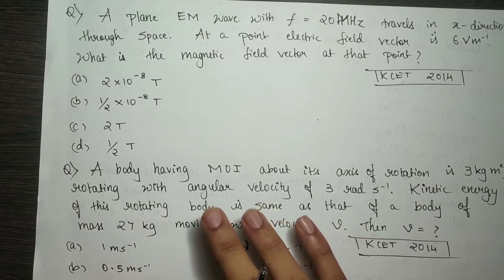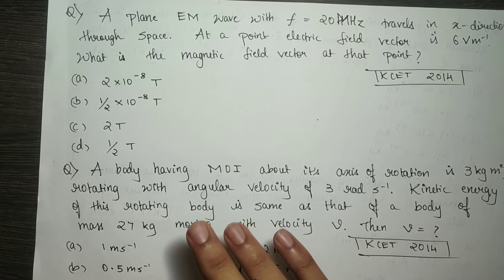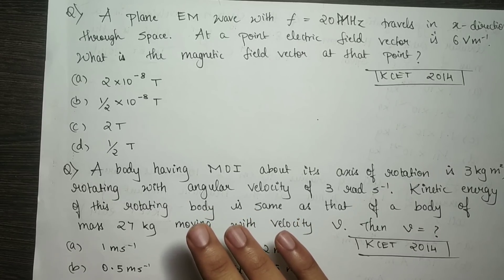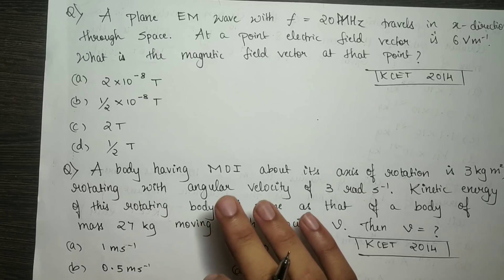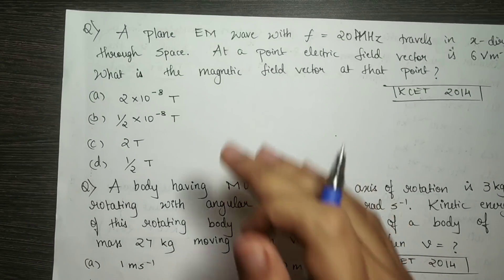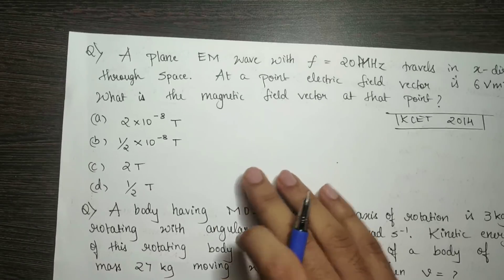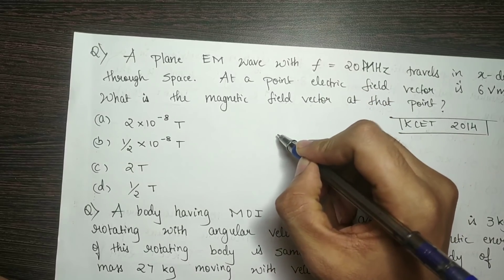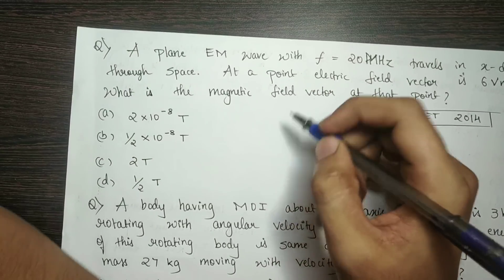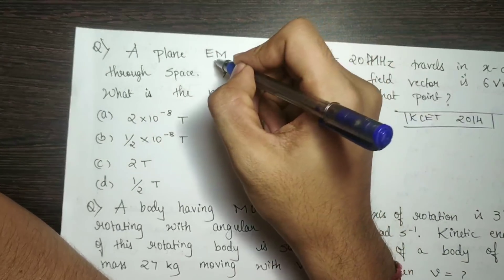A plane electromagnetic wave with frequency equal to 20 megahertz travels in the x-direction through space. At a point, the electric field vector is 6 volts per meter. What is the magnetic field vector at that point? It is simple — you can see the catch.